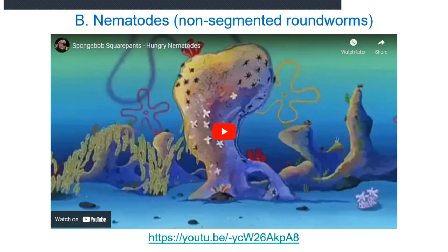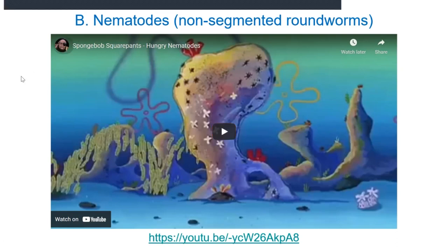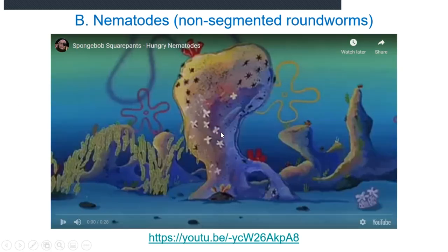We talked about the flatworms. The flatworms include, of course, the tapeworms and the flukes. We have a few more things to talk about in terms of these parasites. The next group we want to talk about are the nematodes. Nematodes are non-segmented roundworms. To introduce the nematodes, I have a clip from SpongeBob — who doesn't like SpongeBob? I'll play that for you.